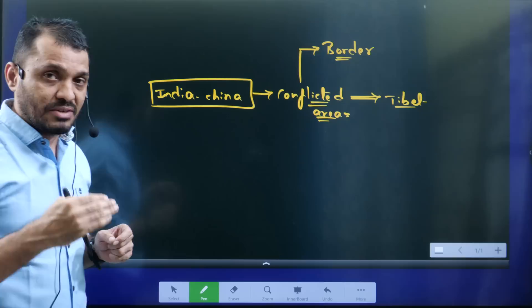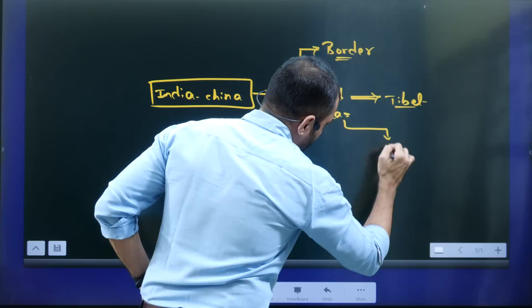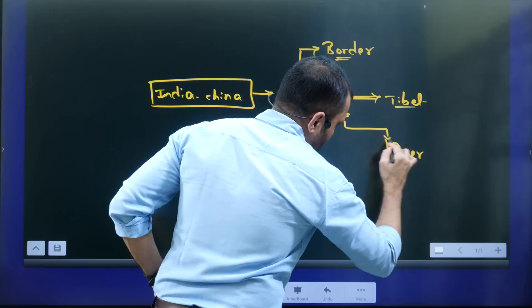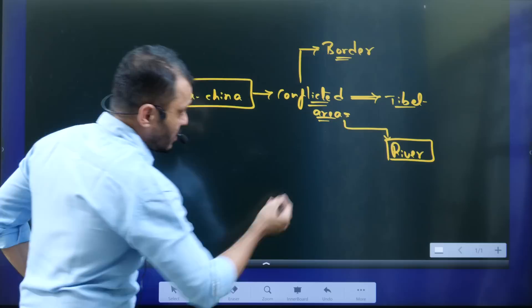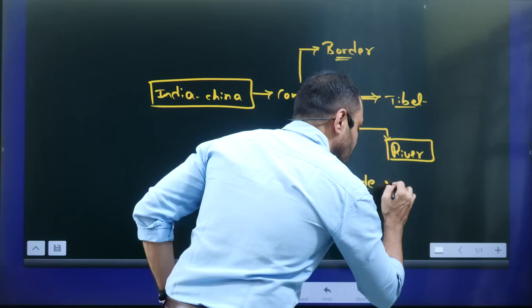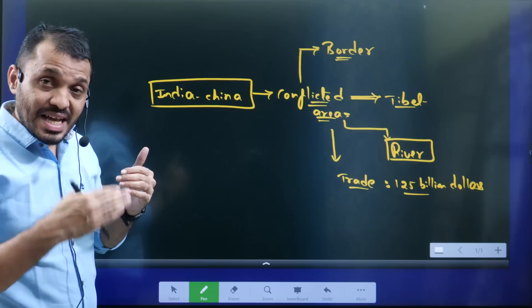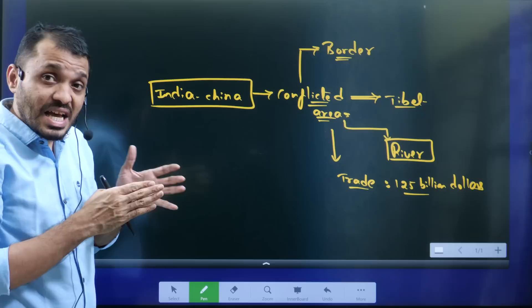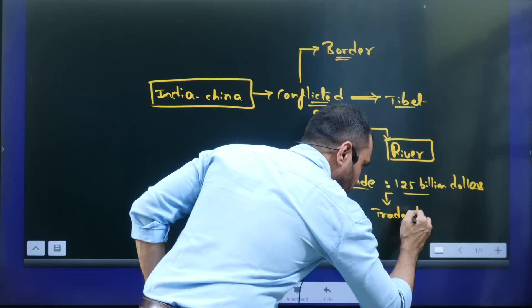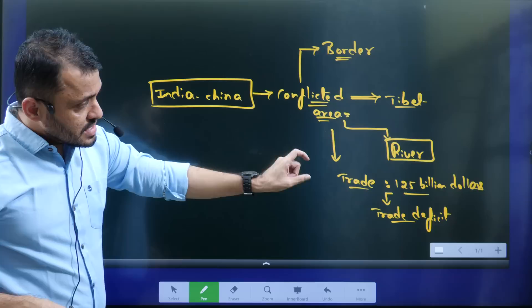Another conflicted area is river water. The Brahmaputra river flows from China to India and from India to Bangladesh. In terms of trade, there is also conflict — there is a large trade deficit. The India-China bilateral trade is around 125 billion dollars. Out of this, 97 billion dollars are Chinese exports to India, whereas only 27 to 28 billion dollars are India's exports to China — meaning India has a trade deficit of around 69 billion dollars.